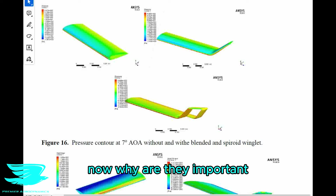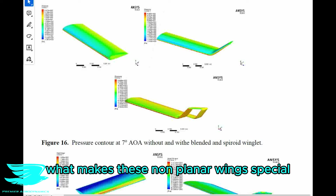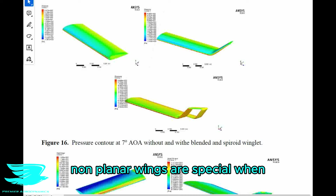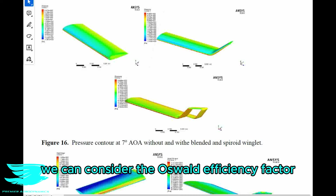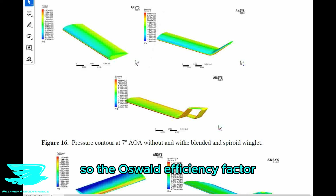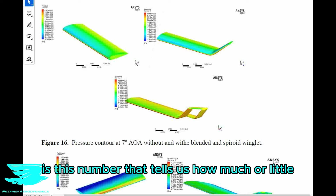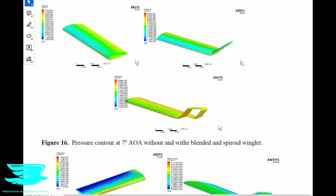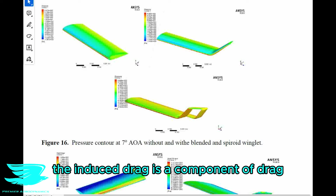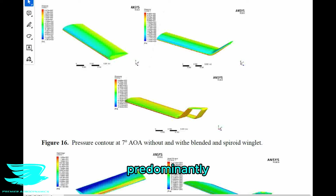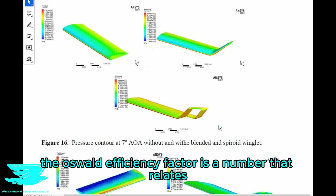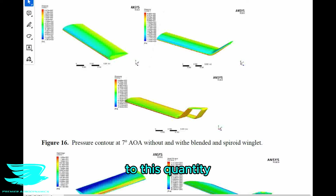Now, why are they important? What makes these non-planar wings special? Well, to some extent, non-planar wings are special because we can consider the Oswald efficiency factor. The Oswald efficiency factor is this number that tells us how much or little induced drag a wing will produce. The induced drag is a component of drag predominantly of objects that produce lift, because the full name of this term is actually lift-induced drag. The Oswald efficiency factor is a number that relates to this quantity.